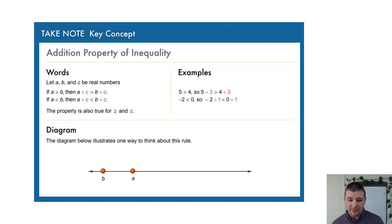We'll take a look at the examples on the right. 5 is greater than 4, so 5 + 3 is greater than 4 + 3. Negative 2 is less than 0, so -2 + 1 is less than 0 + 1.